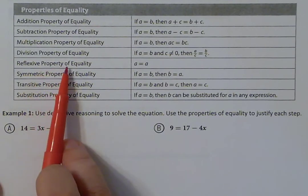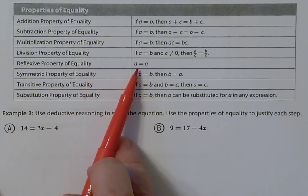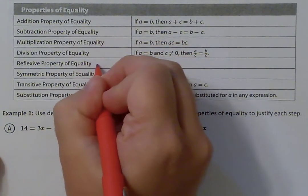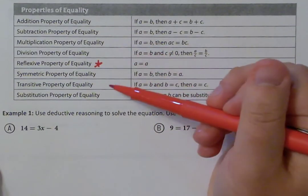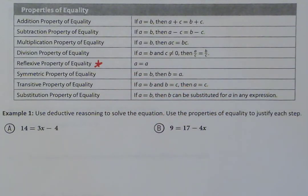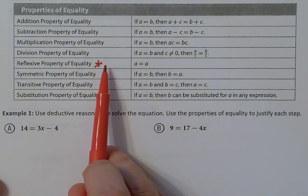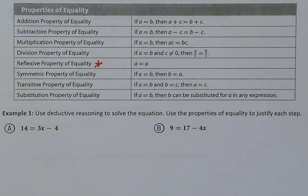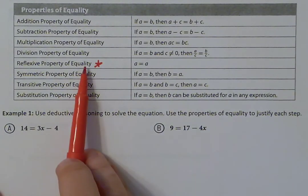The reflexive property of equality states that something is equal to itself — a equals a. I want to highlight and star this property because, out of all these properties in geometry, this is the one you'll use the most. It pops up when proving triangles congruent. If triangles share the same side, I can say side AB equals AB based on the reflexive property.